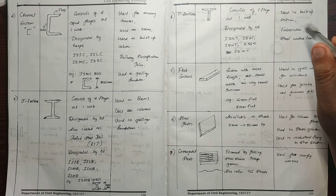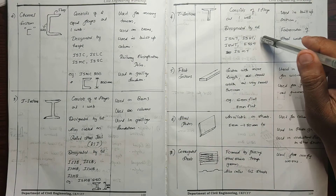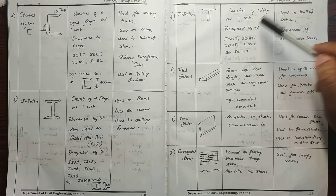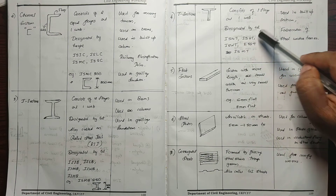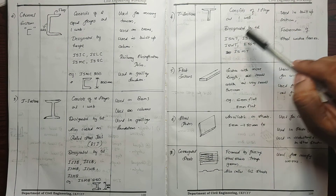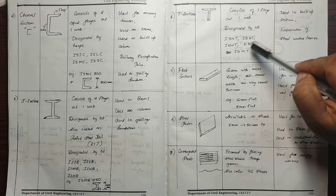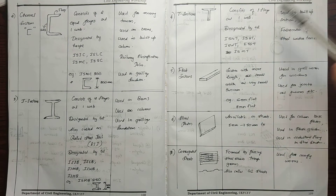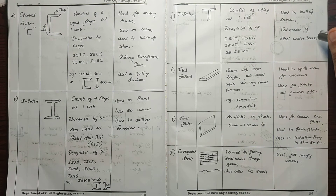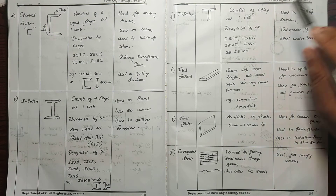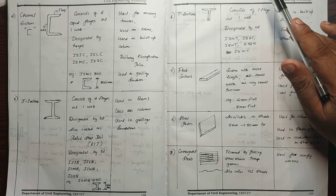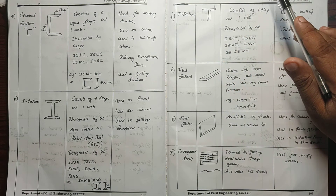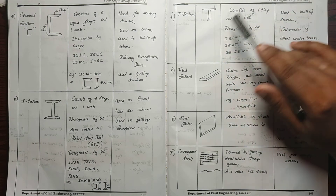The T-Section is available and used in water tanks — specifically steel water tank joints.